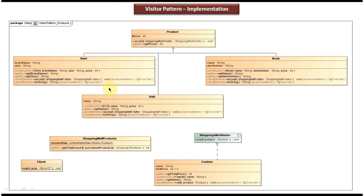This is the class diagram of the scenario we just discussed. The Product class is the visitable object and it has an accept method which accepts the visitor object. This accept method is abstract and it has a price attribute with a getter method. The Product abstract class is extended by three concrete classes: Shirt, Book, and DVD. These are visitable objects, so they provide implementation of the accept method.